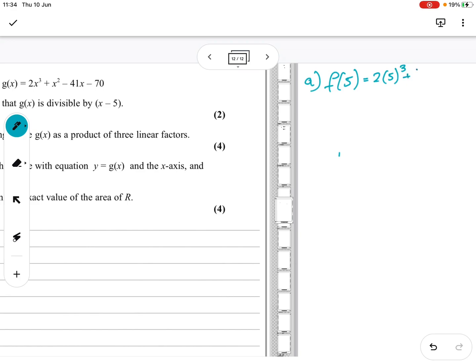So that equals 2(5³) + 5² - 41(5) - 70. So 2 times 5 to the power of 3 is 250 plus 25 minus 41 times 5 is 205 minus 70. 250 plus 25 minus 205 minus 70.